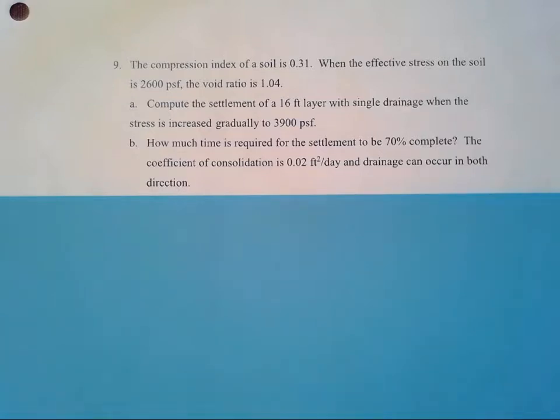Okay, last geotech homework number nine. We're told the compression index of a soil is 0.31. When the effective stress on the soil is 2,600 PSF, the void ratio is 1.04.